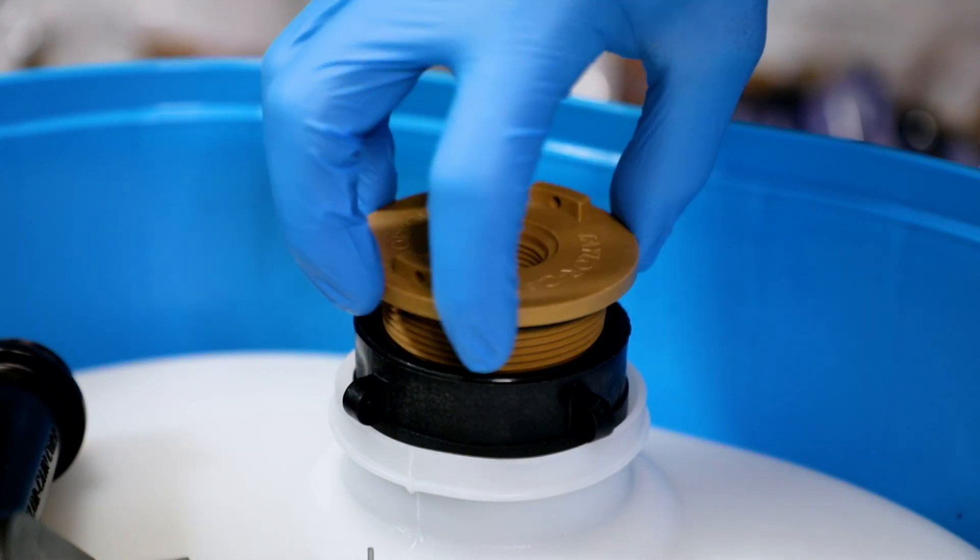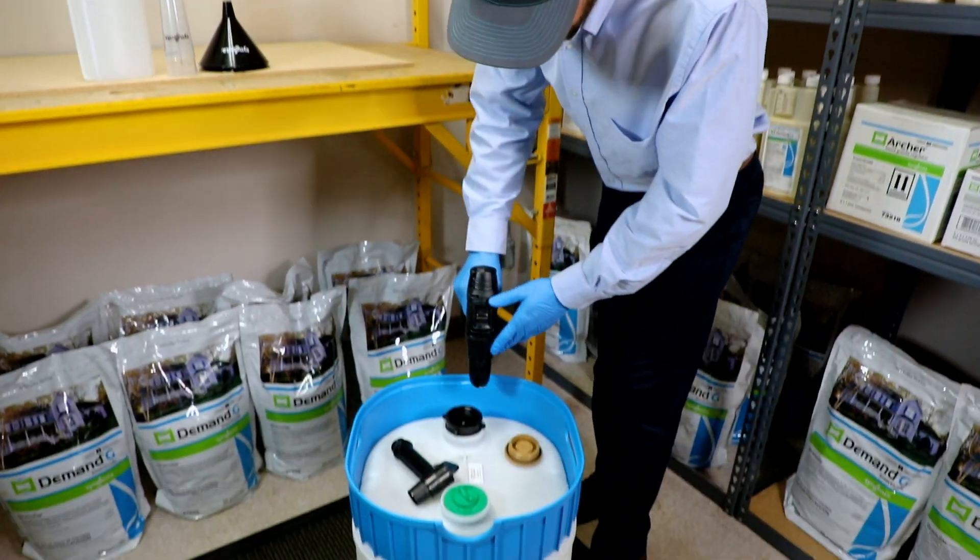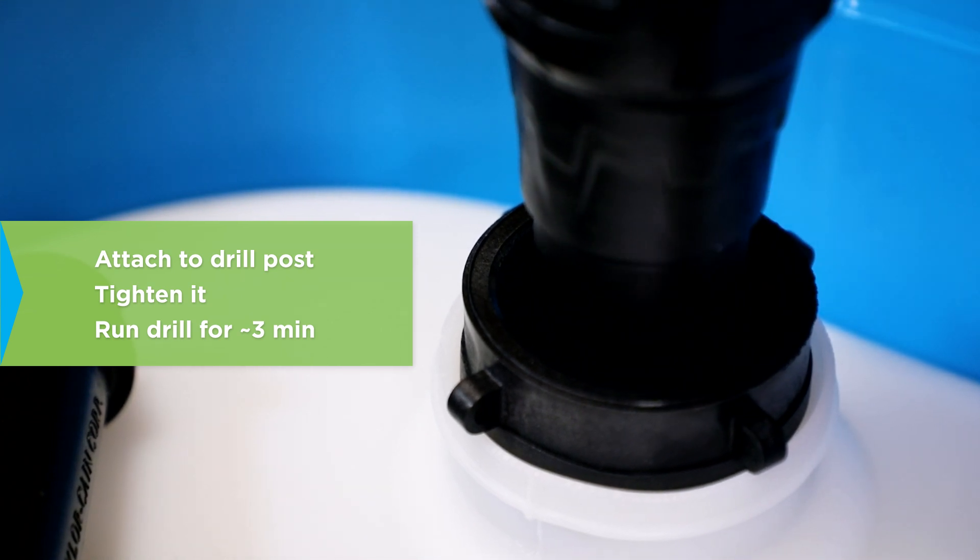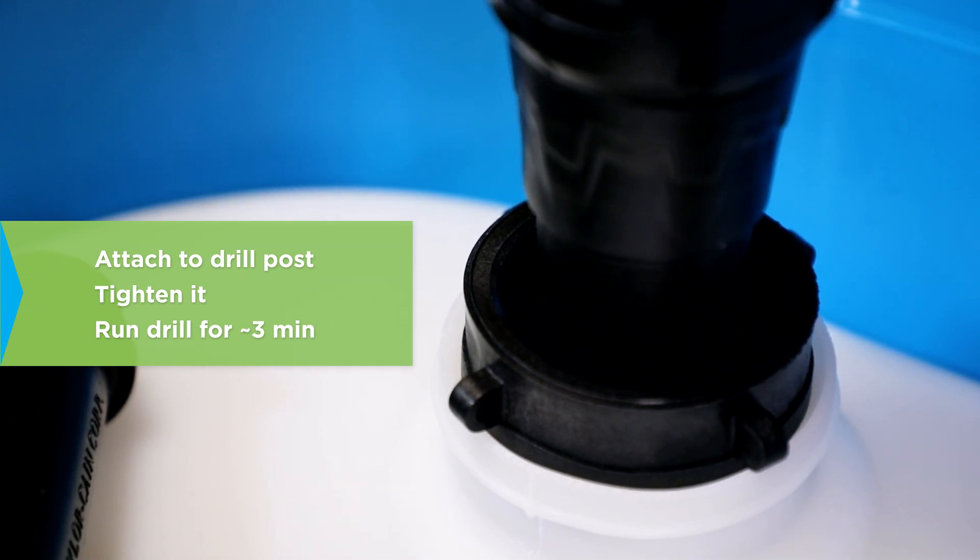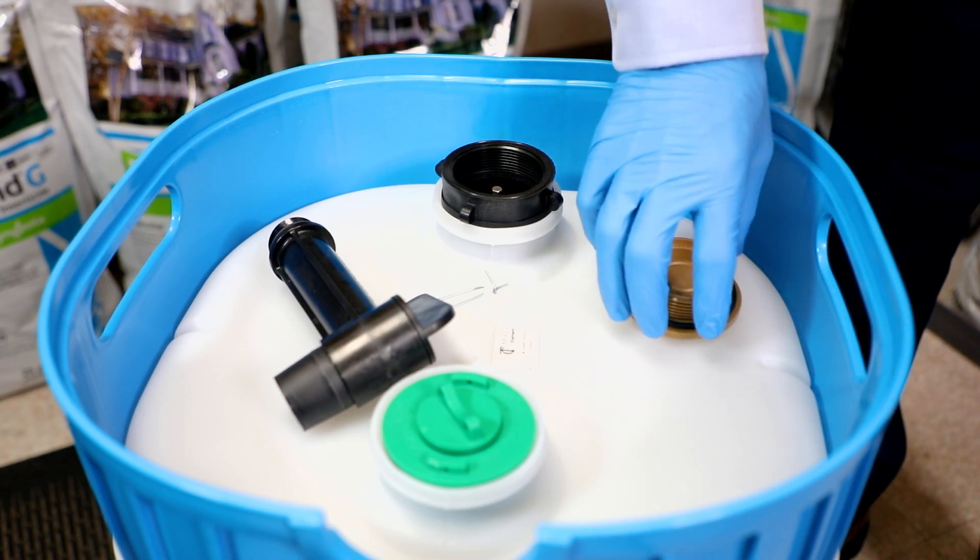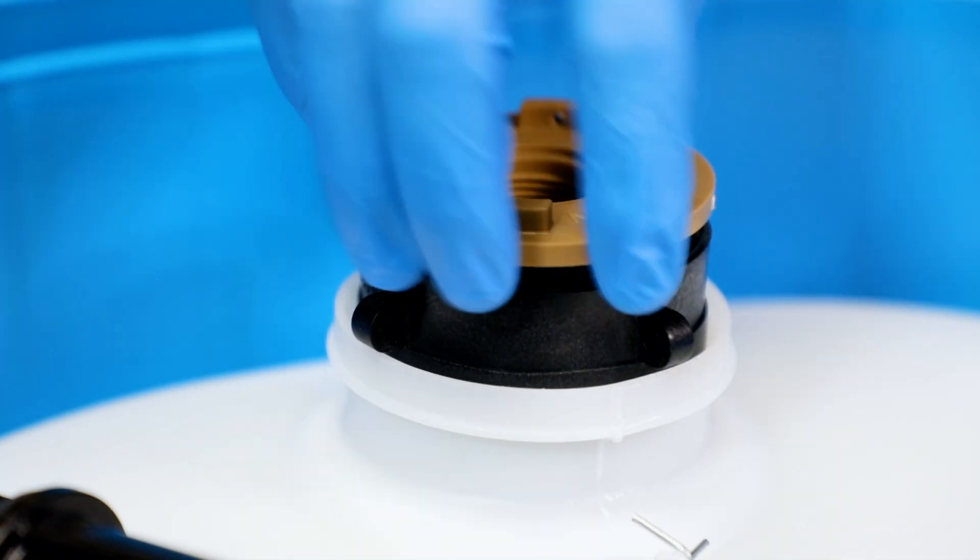To begin mixing, unscrew the cap from the impeller using a standard household drill. Attach the cap to the post inside the impeller opening, tighten it, and then run the drill for approximately three minutes or until the product is homogenous. When mixing is complete, place the cap back onto the impeller, making sure not to cross-thread it.